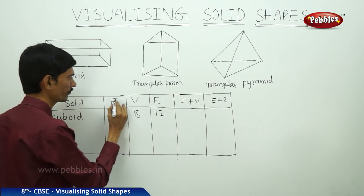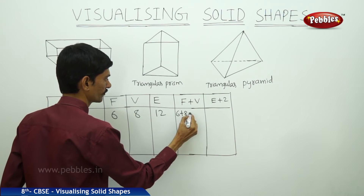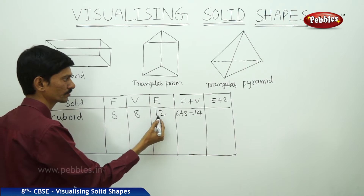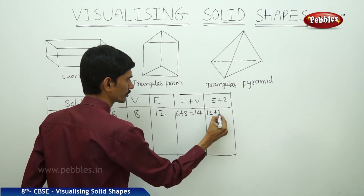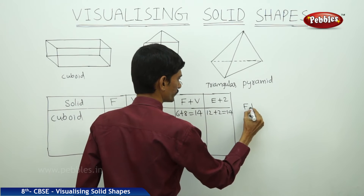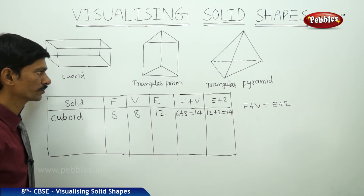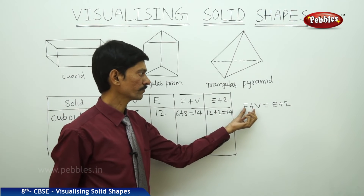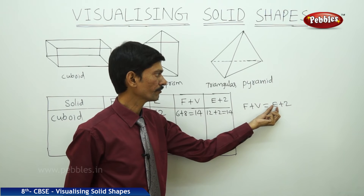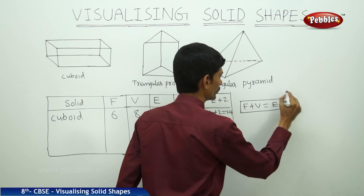Now let us add the number of faces and vertices: 6 + 8 = 14. Then E + 2: edges are 12, so 12 + 2 = 14. We get F + V = E + 2. This result is known as Euler's formula. For any regular polyhedron, the sum of the number of faces and vertices equals the sum of the number of edges and two.